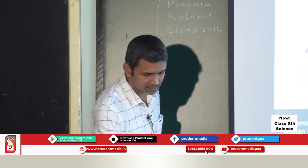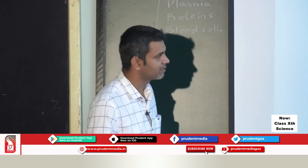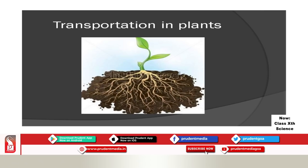Now let us learn about transportation in plants. Transportation in plants is slow because plants consist of many dead cells. Plants require carbon dioxide from the air. Plants also require oxygen for respiration. Sometimes in plants, oxygen acts as a waste product. Plants have two vascular tissues — both are complex tissues that help in transportation.